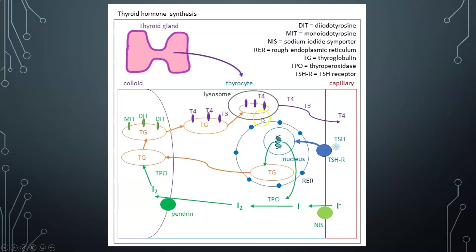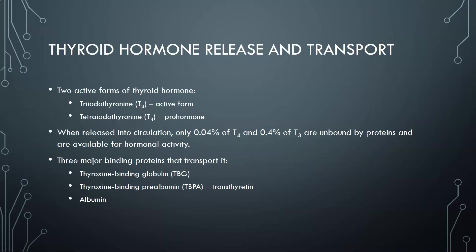A lysosome then takes up the thyroglobulin and cleaves the T4s and T3s from it, releasing them from the thyroglobulin. They leave the cell and enter the blood, where T3 and T4 circulate and have effects on other cells in the body.